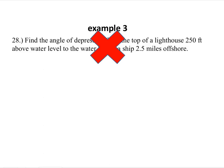Problem 28, you can see I put a big red X in it. This was a misprint in your note packet. This was the 28 out of the previous version of the textbook. Find the angle of depression from the top of a lighthouse 250 feet above water level to the water line of a ship that's 2.5 miles offshore. You can feel free to skip over this if you want, but I will go ahead and do it just for the sake of the video here.